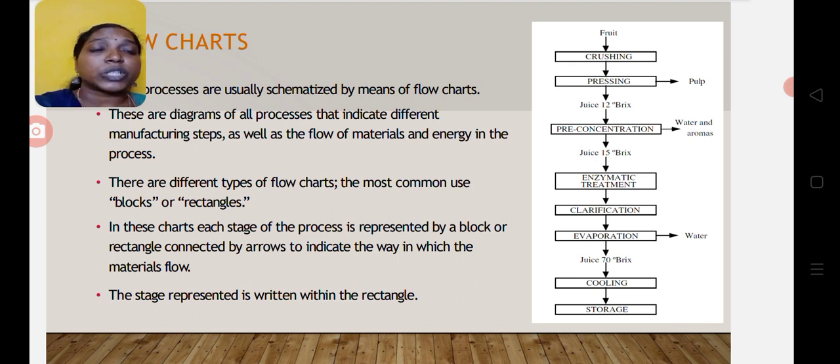Then it goes to evaporation. The main purpose of evaporation is to remove excess moisture content in the juice. After evaporation, we get juice at 70 Brix concentration. Then it goes to cooling and finally to storage.